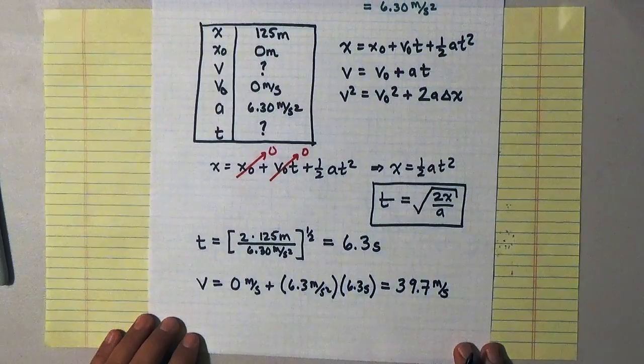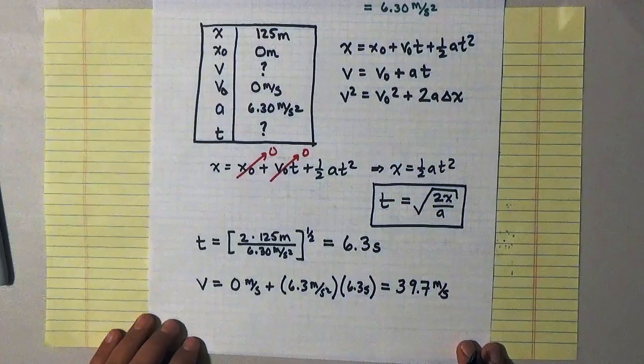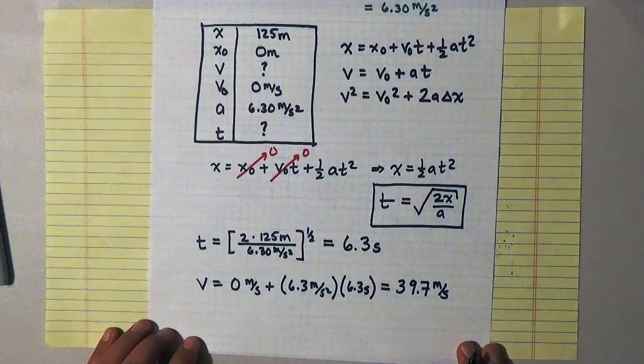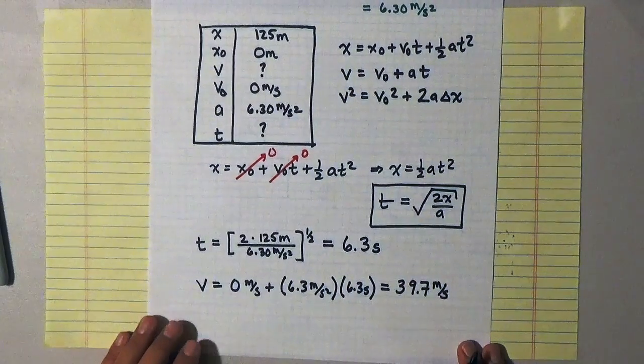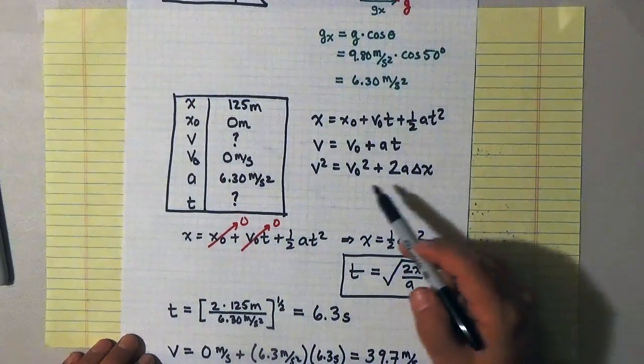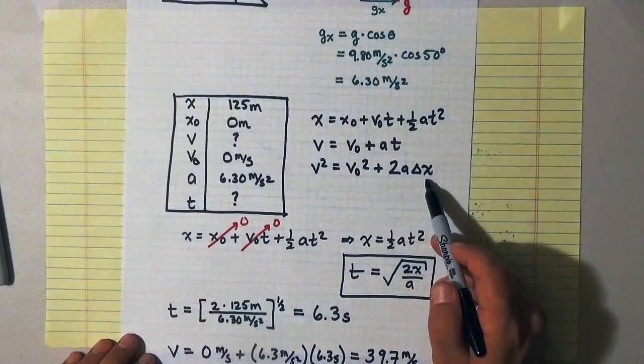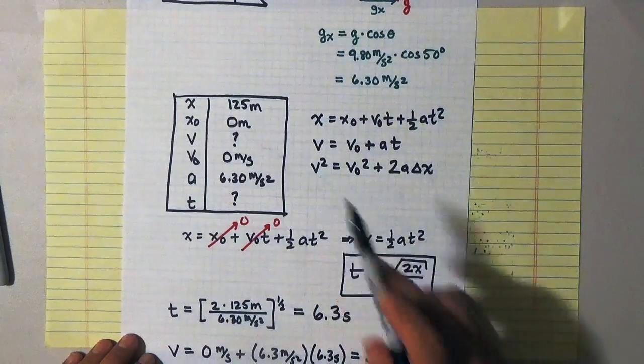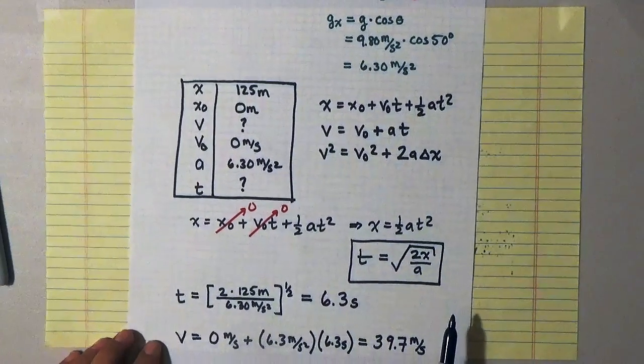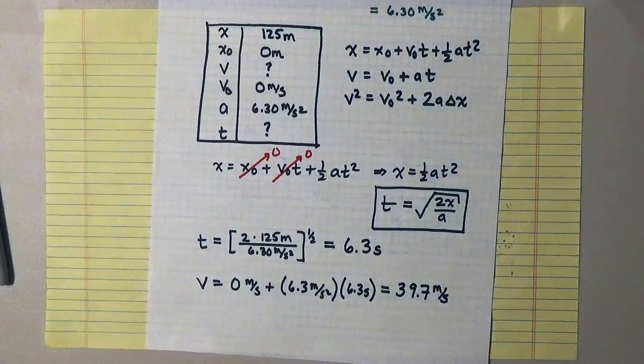The other way that we could have done the problem, and one of the tricks that I often use to avoid solving quadratic equations, is I could have solved for the final speed before I solved for the time. And the way I would have done that is I would have used this kinematic equation. I know everything in this kinematic equation, a and delta x, to find the final speed without solving for time first. So that's that problem. I'll wish you luck, and I'll see you again next time.